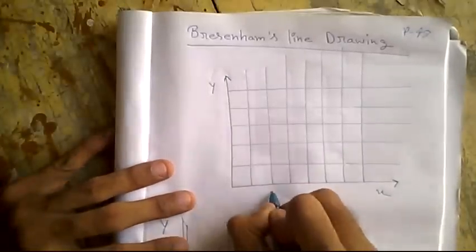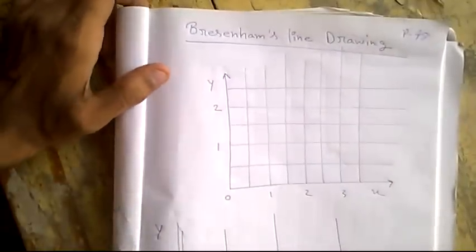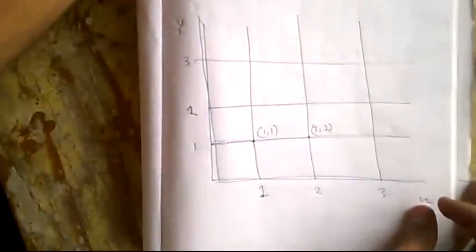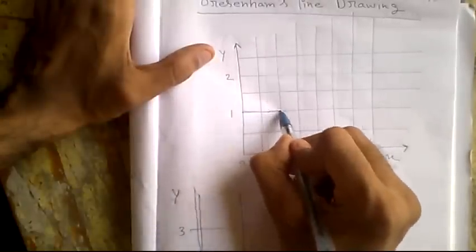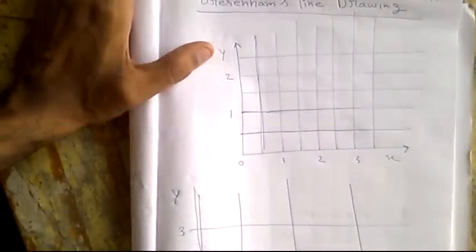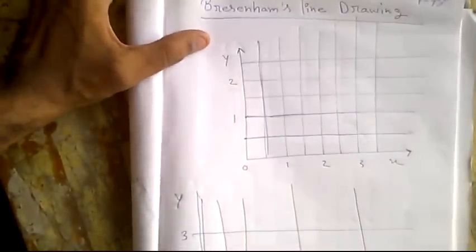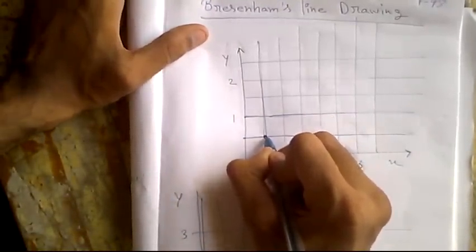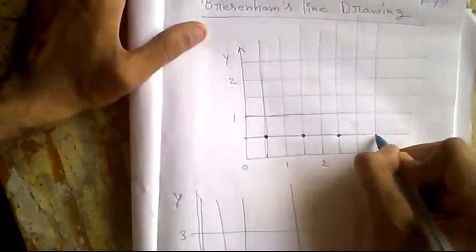Now we will look at this graph. Here this is 1, 2, 3 and 0, 1, 2. This is the same graph shown below, but in this case we can see we have drawn a line separating each box. And this is the box. The midpoint of each box is called a pixel.